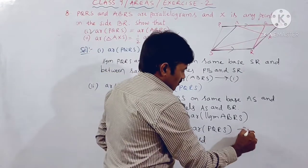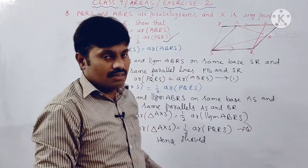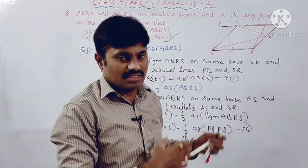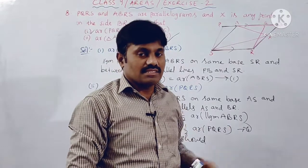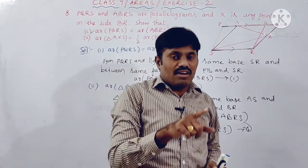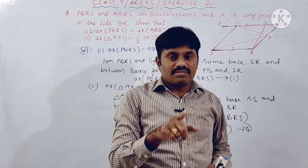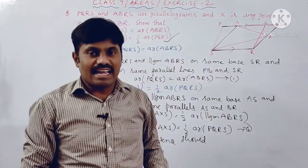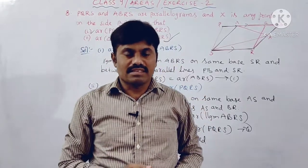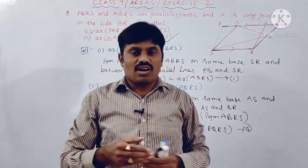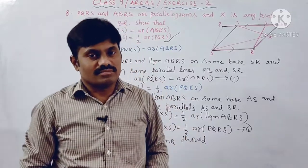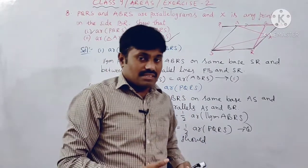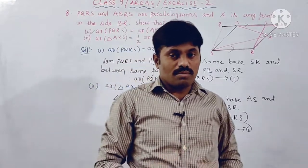So it is very easy and very simple. We just need to recall those concepts from previous sessions: parallelograms on the same base and between same parallel lines are equal in area, and a triangle on the same base and between the same parallel lines as a parallelogram has area equal to half that of the parallelogram.